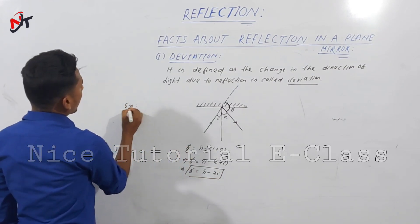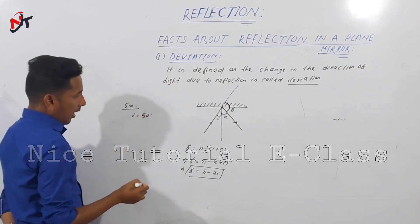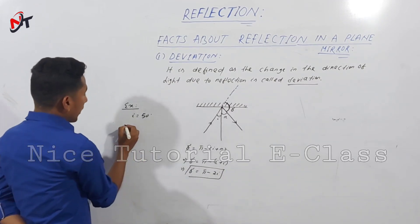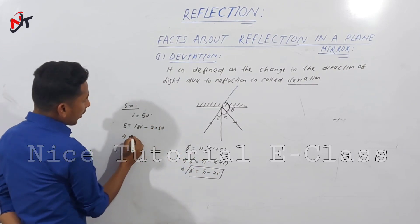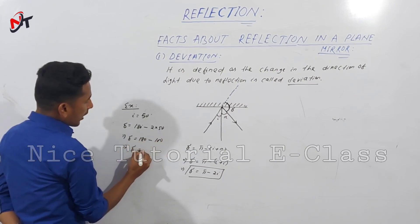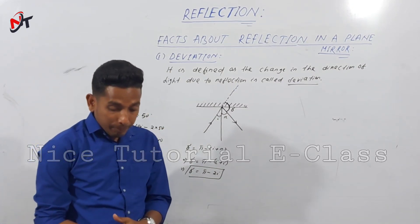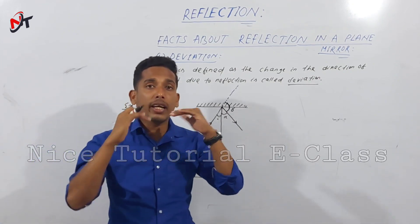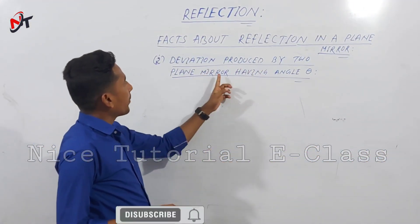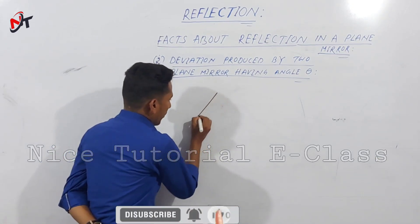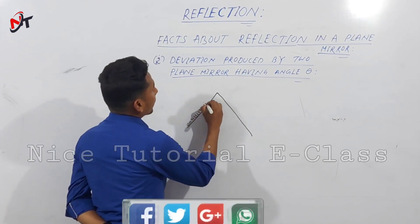For example, if the angle of incidence is 50 degrees, then delta equals 180 degrees minus 2 times 50, so delta equals 180 minus 100, which gives delta equals 80 degrees.